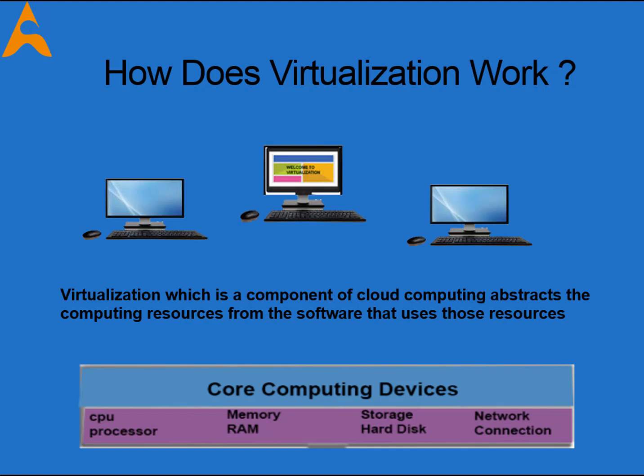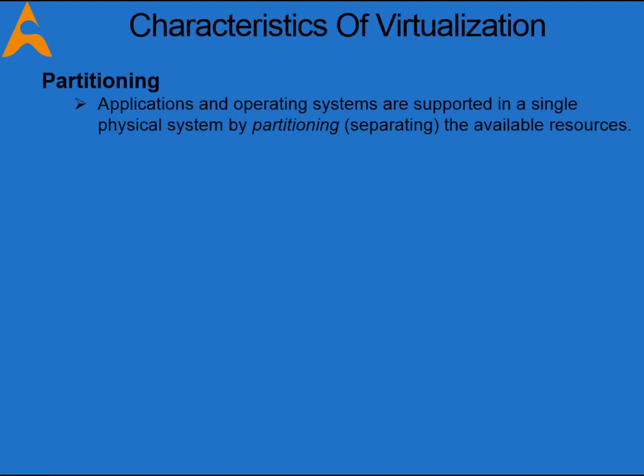This means you can transfer the entire operating system, along with applications and settings, to another piece of server hardware, and everything stays intact — just copy and paste it to a new piece of server hardware. This is done with virtualization software called a hypervisor. A hypervisor is a kind of operating software that you install on the hardware on which you want to install your virtual machines.